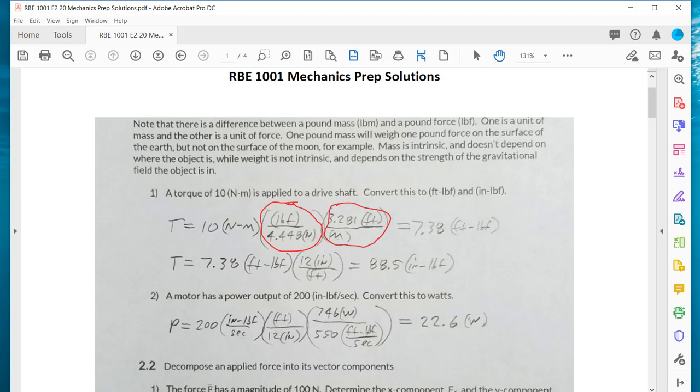And then the same thing to go from foot-pounds, just multiply by 12 inches over 1 foot to get it in inch-pounds.